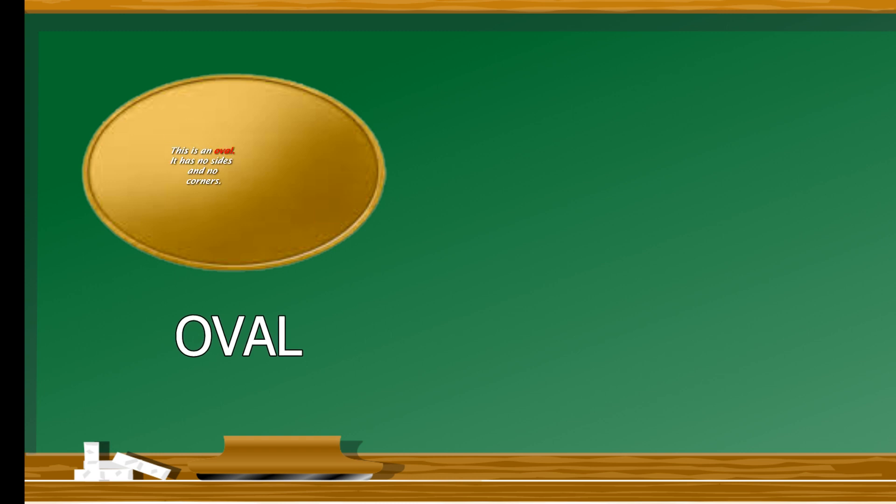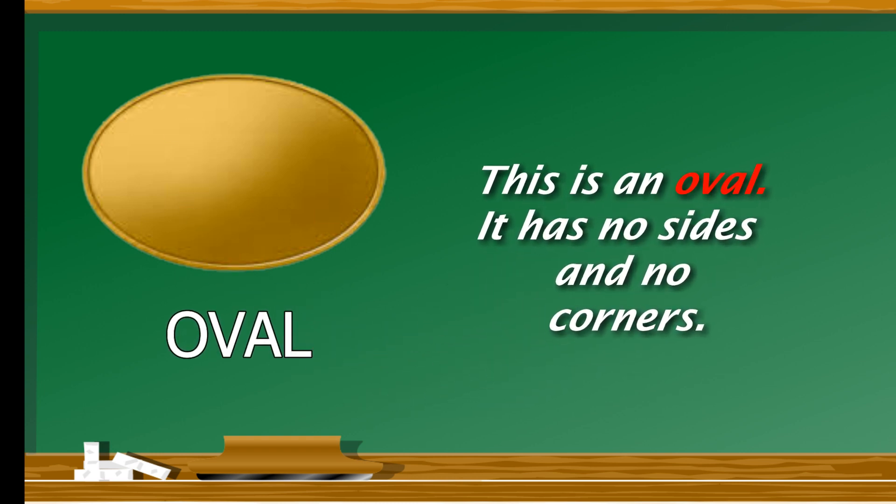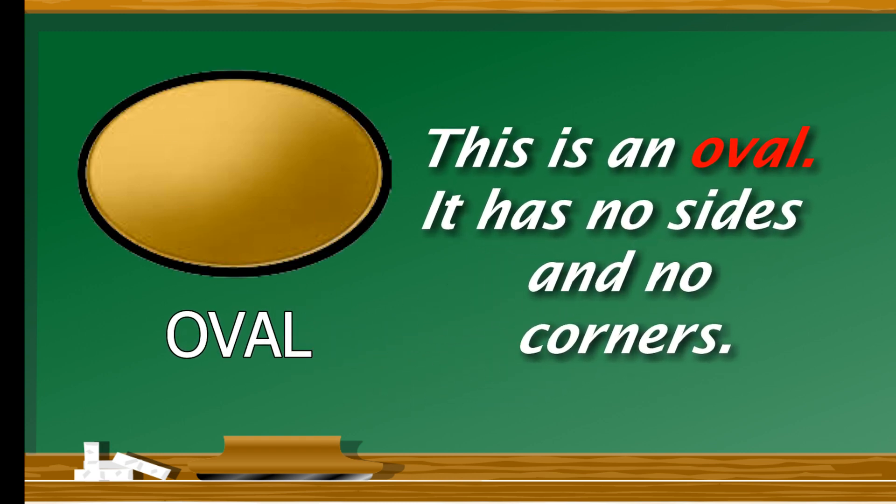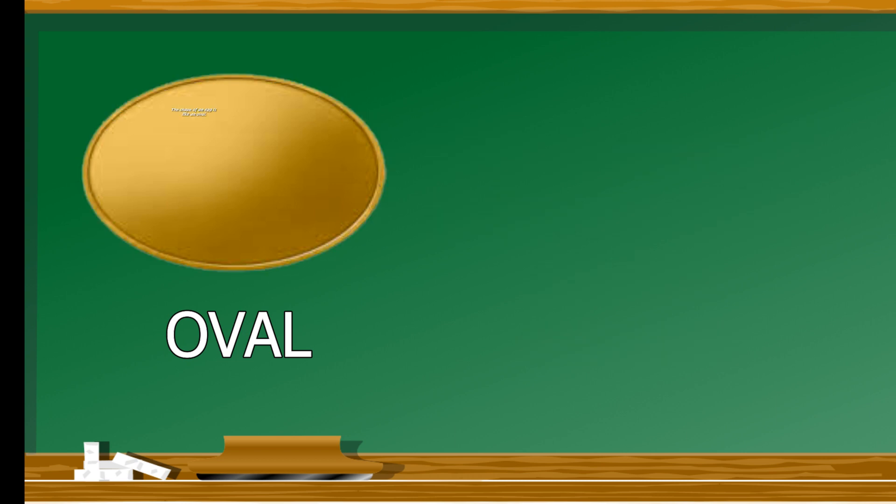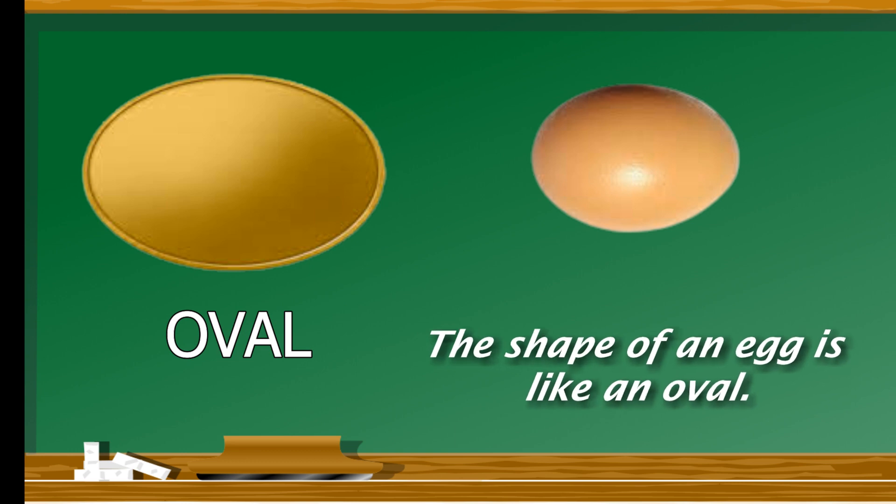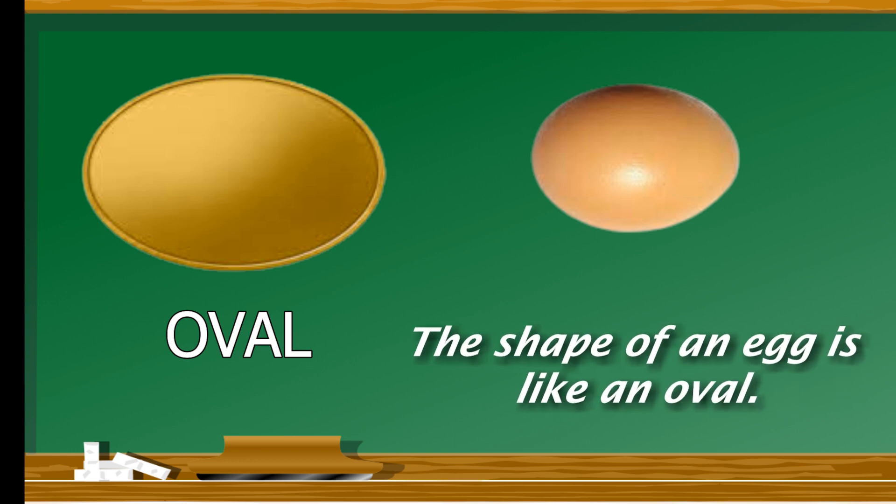Oval. This is an oval. It also has no sides and no corners. The shape of an egg is like an oval.